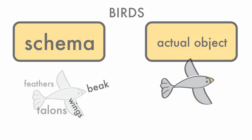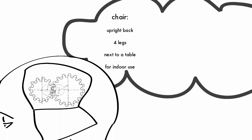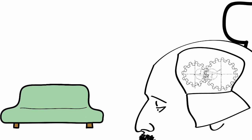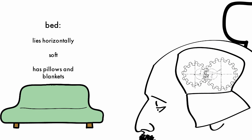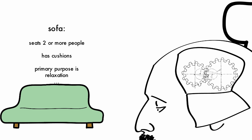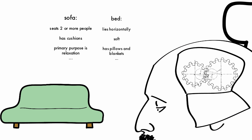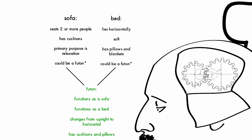Here's an example. You have a schema for a chair, a bed, and a sofa. The first time you see a futon, you immediately search your stored schema to see if it fits with anything you have already encountered. If it comes close, you make subtle changes to your schema to include the new item. In this example, you now have a schema of a sofa that includes the traditional characteristics along with those of a futon.